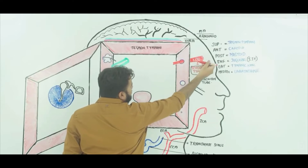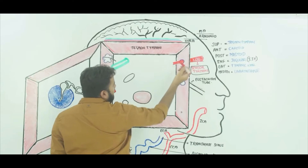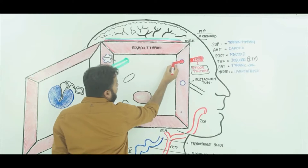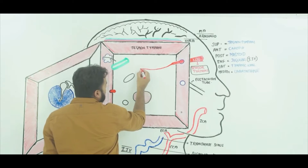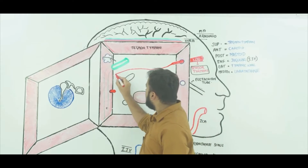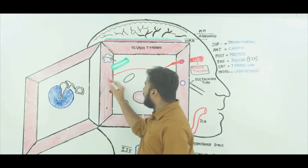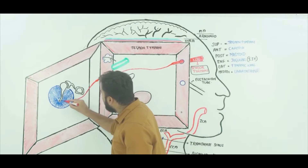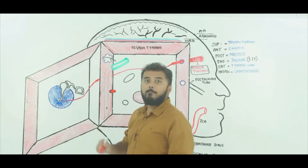You have got this muscle. This muscle enters all the way — it makes a hole and enters all the way into this anterior wall. This muscle comes all the way down like this. The tendon of this muscle attaches to your malleus.